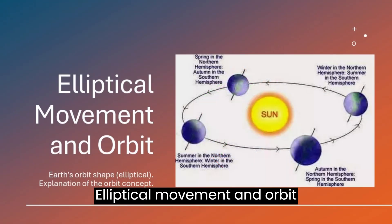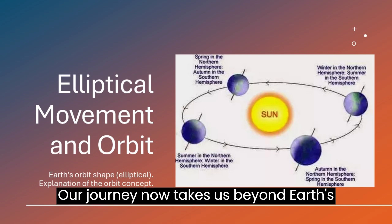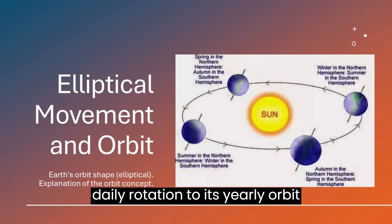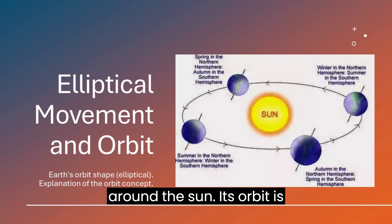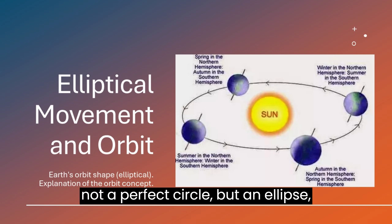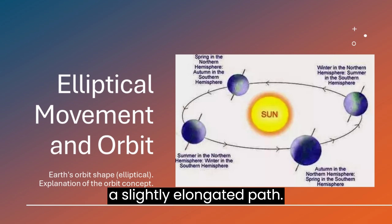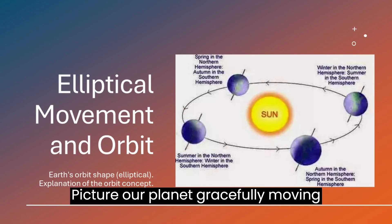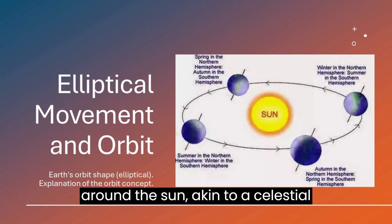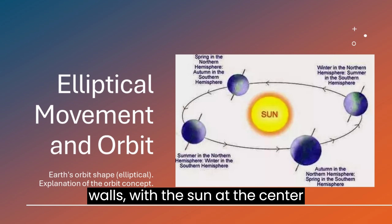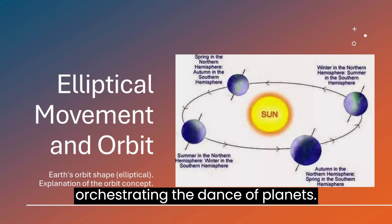Our journey now takes us beyond Earth's daily rotation to its yearly orbit around the sun. Earth's orbit is not a perfect circle but an ellipse — a slightly elongated path. Picture our planet gracefully moving around the sun, akin to a celestial waltz, with the sun at the center orchestrating the dance of planets.